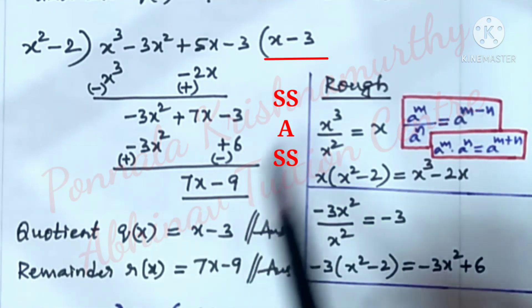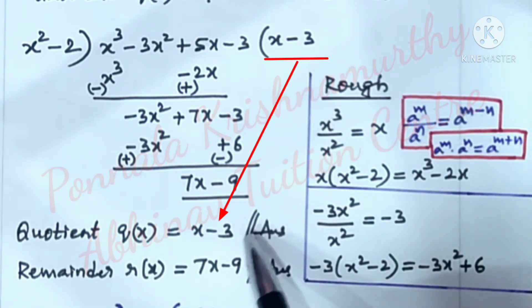Now, quotient q(x) is this x - 3 and remainder r(x) is equal to 7x - 9. Answers.